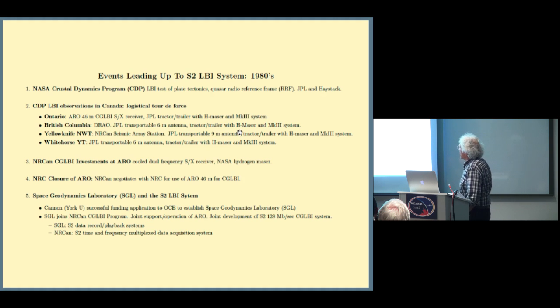NRCan began serious investments in building up the capability in the geophysical side for LBI in Canada. They purchased the one cryocooled SX receiver used in the NASA CASA-Dynamics program. A NASA hydrogen maser was installed at ARO. And then just after that happened, NRC closed ARO. The CG-LBI program was in jeopardy. NRCan had to negotiate with NRC for the continued use of the antenna.